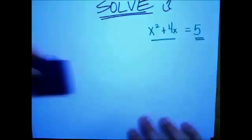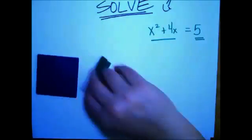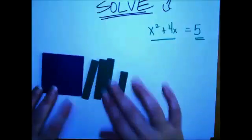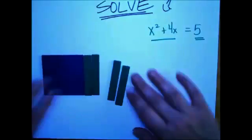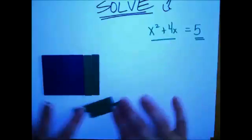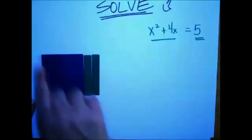We've got x squared and we've got 4x's. And we know that in order to make this a square, that we have to divide those x's into two different groups, put two up here and two down here so that we have equal sides to make this a square.